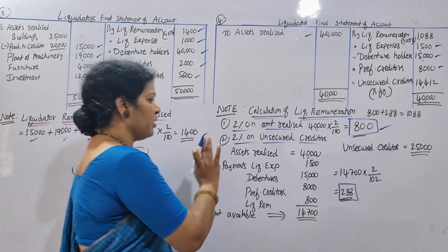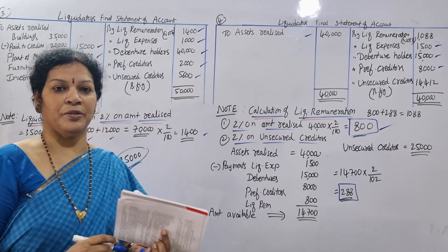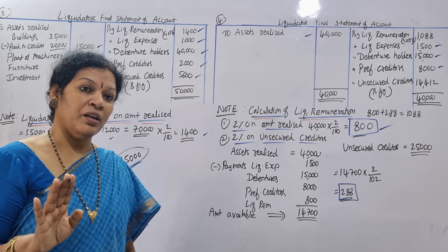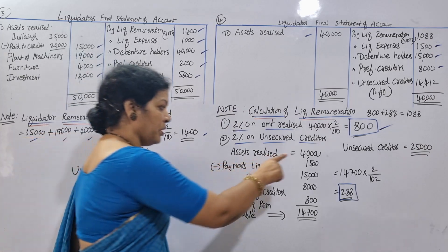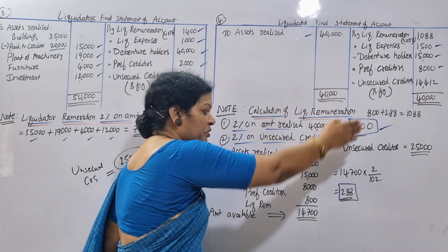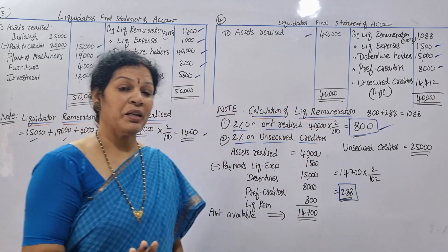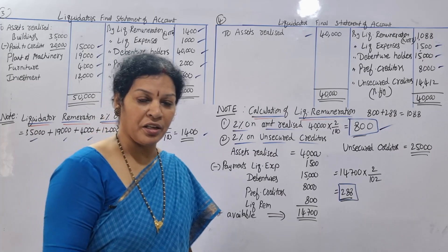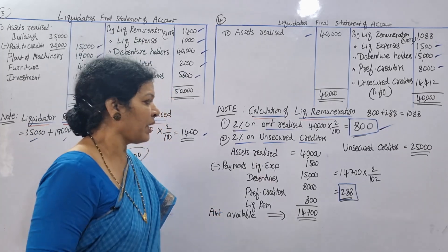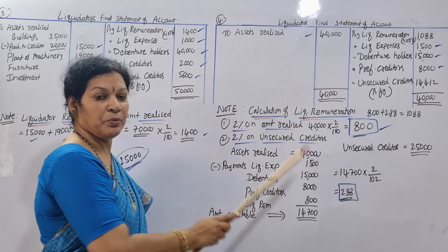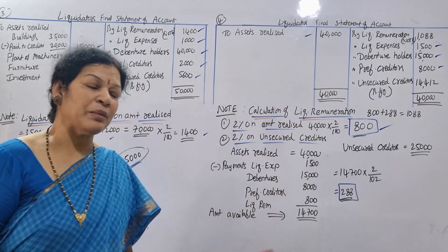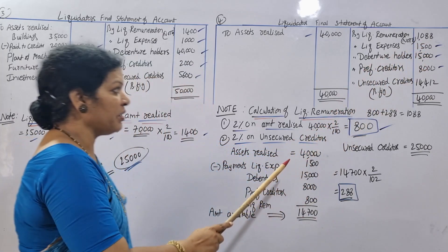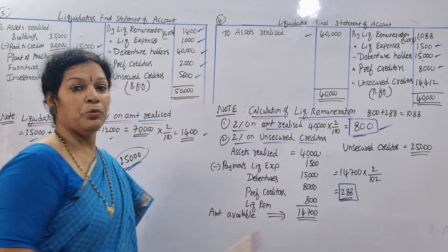The second commission requires care. 2% on the unsecured creditors. When we take amount realized minus payments — the payments are: liquidation expenses $1,500, debentures $15,000, preferential creditors $8,000. These three payments total we subtract.